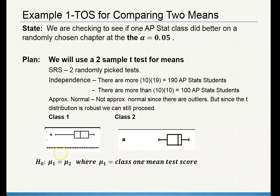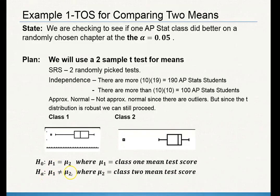What does the null and alternative look like? The null is always going to assume that the two classes are equal — the mean of class one is the same as the mean of class two. The alternative here is a little bit tricky. We're stating that they're not equal to each other because we're checking to see if one class did better than the other — we're not sure which direction. Make sure you define what mu one and mu two are.